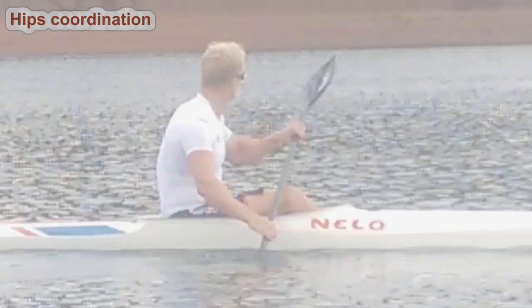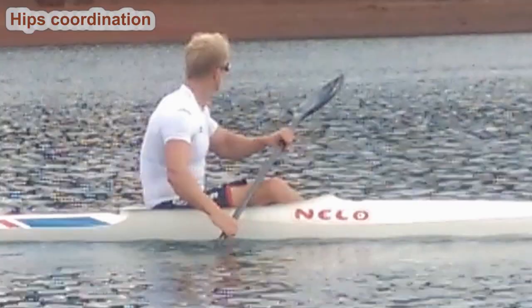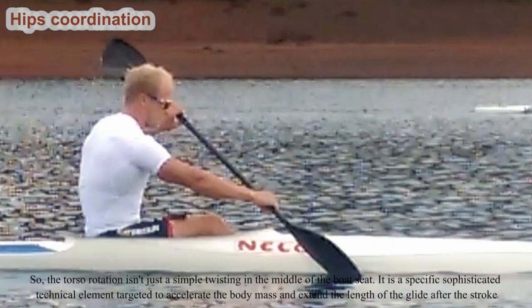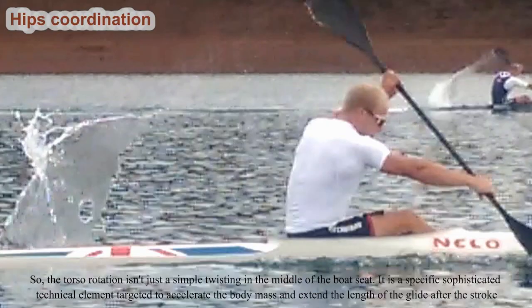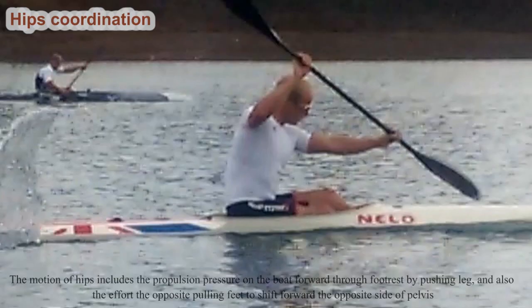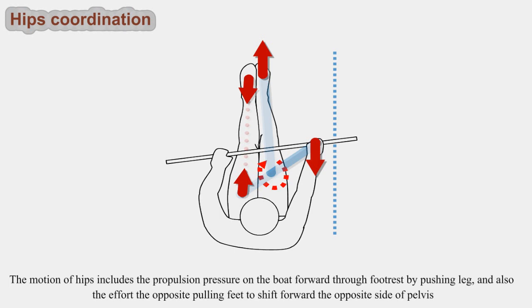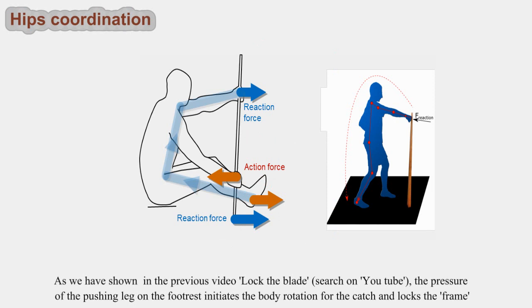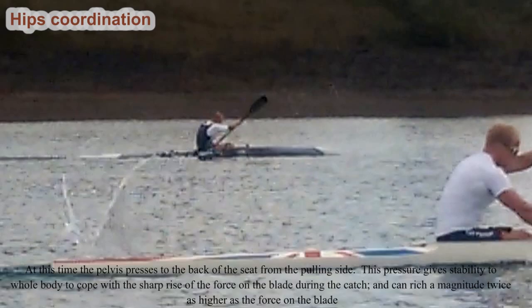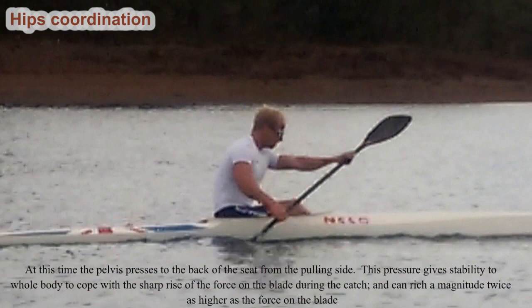The torso rotation isn't just a simple twisting in the middle of the boat seat — it is a specific sophisticated technical element targeted to accelerate the body mass and extend the length of the glide after the stroke. The motion of hips includes propulsion pressure on the boat forward through the footrest by the pushing leg, and the effort of the opposite pulling leg to shift forward the opposite side of the pelvis. The pressure of the pushing leg on the footrest initiates the body rotation for the catch, locks the frame, and at this time the pelvis presses to the back of the seat from the pulling side, with this pressure reaching a magnitude twice as high as the force on the blade.